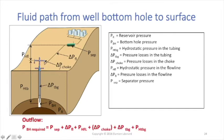We've got Delta P choke, which is the pressure loss in the choke, then we've got P-HFL, which is the hydrostatic pressure in the flow line.